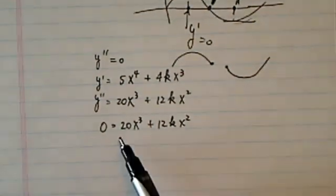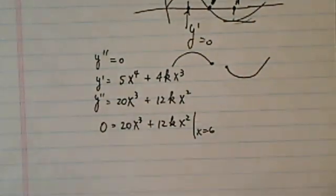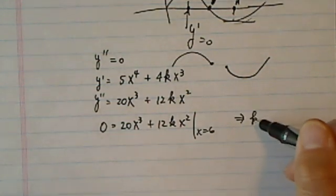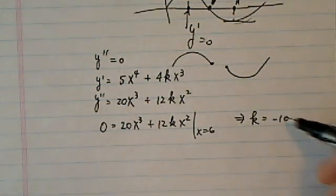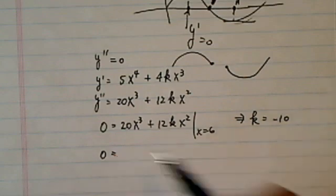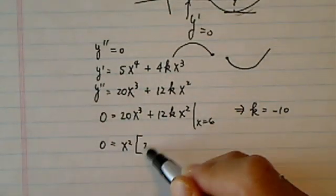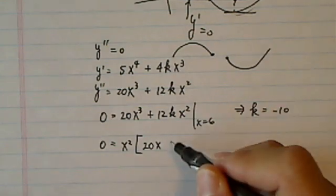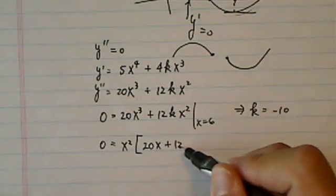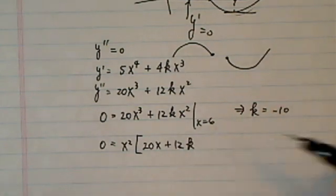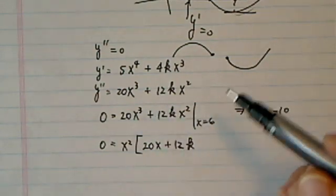So zero is equal to 20x cubed plus 12k times x squared. Now at this point, you can evaluate x equal to 6 and plug in there, and you can find that k is equal to minus 10. Now I am a big proponent of doing as little work as you can possibly manage, so let's see if we can do it without stressing ourselves out solving that big 6 to the cube thing.